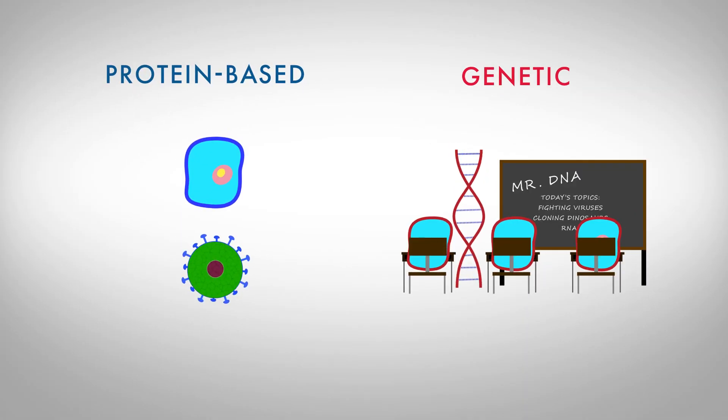A protein-based vaccine is like learning on the job, while a genetic vaccine is like going to school. Both work, but the risks are different.